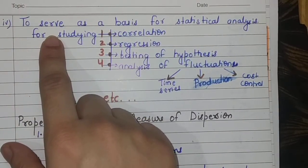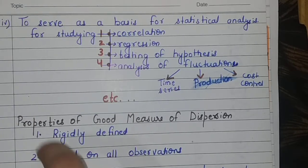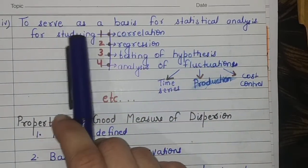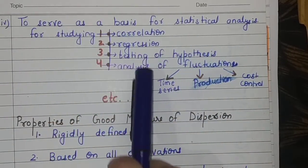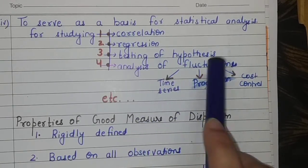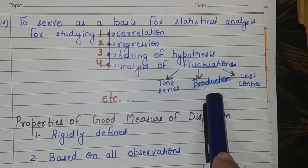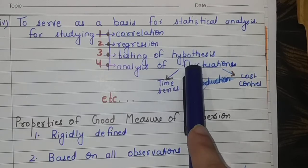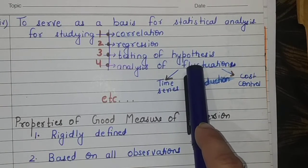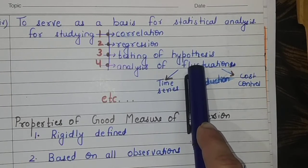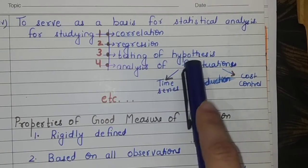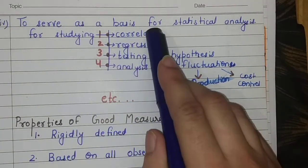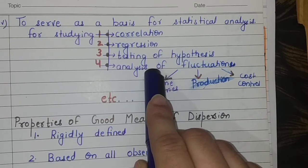Now fourth one says, we use measures of dispersion for further statistical analysis, to serve as a basis for statistical analysis. For studying correlation, regression, testing of hypothesis, analysis of fluctuation - why is your time series data fluctuating so much, why is your production fluctuating, why is your cost fluctuating? To study all of these, we use measures of dispersion. So measures of dispersion basically provides a base for all different further statistical analysis that we will be studying in further different chapters in our syllabus.